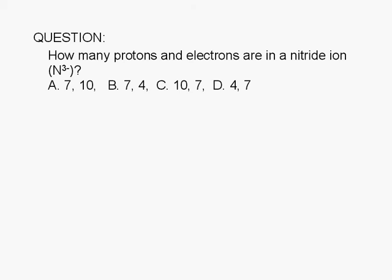How many protons and electrons are in a nitride ion? A, 7 and 10, B, 7 and 4, C, 10 and 7, or D, 4 and 7.